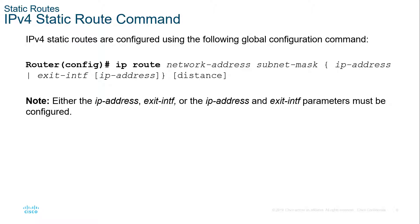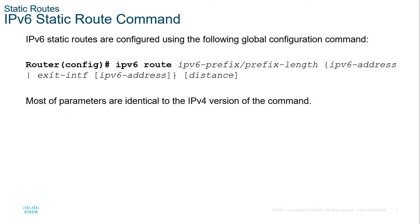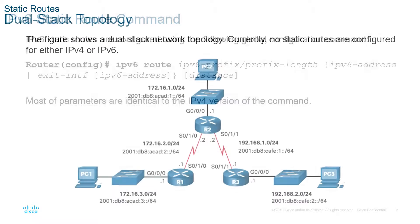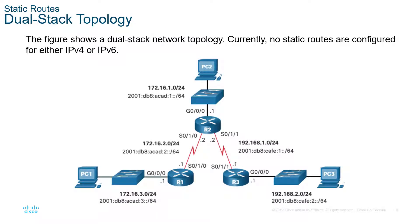For IPv6, it's the same thing, except we use the IPv6 route command, then add the IPv6 prefix and prefix length, then the exit interface or next hop address, and then the distance. For example, here we have R1, R2, and R3. R1 and R2 are connected, R2 and R3 are connected, and they are using both IPv4 and IPv6 — this is known as dual stack.